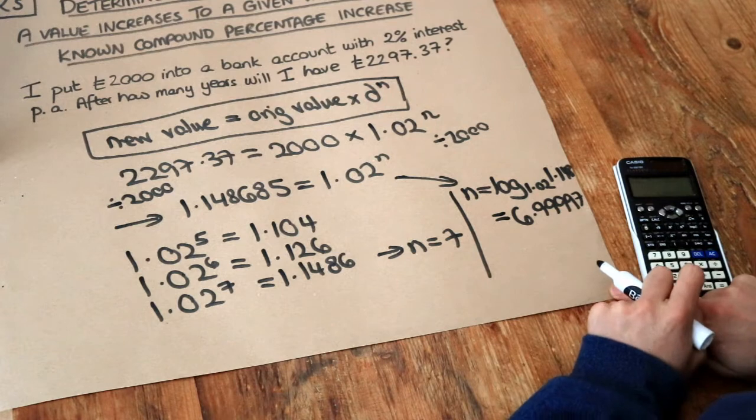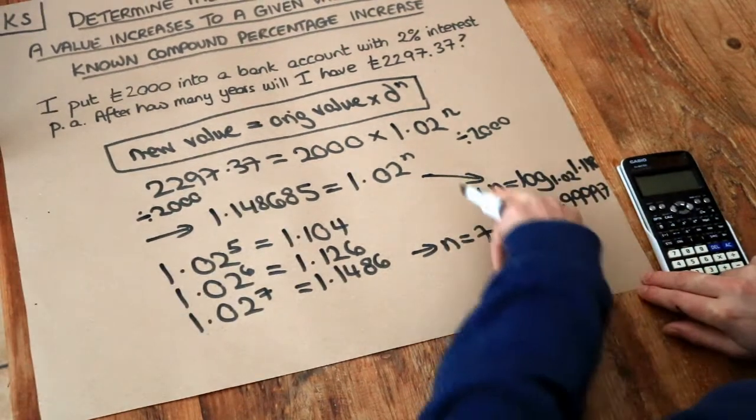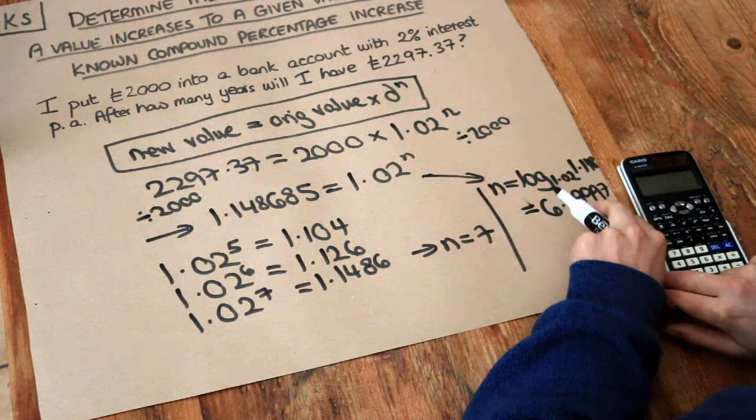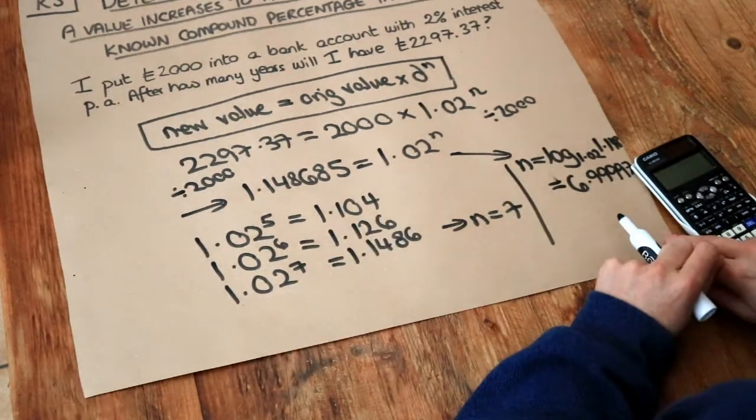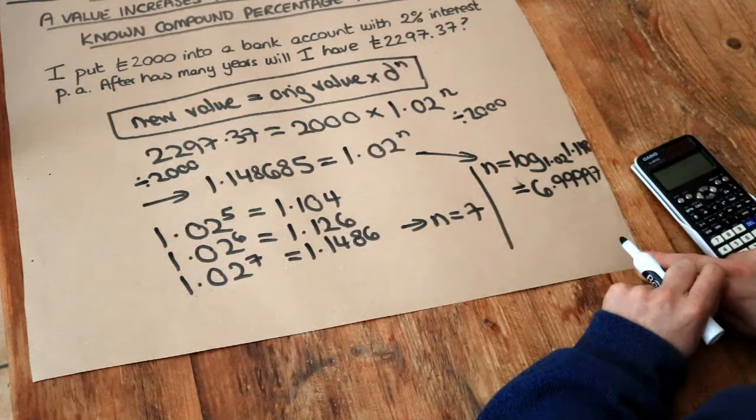Now, you wouldn't be expected to do this at GCSE, for example, because it's not in the syllabus. So this trial and error approach is probably the way they're expecting you to do, but they would allow you to use this method of logarithms here.